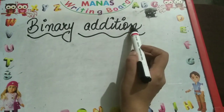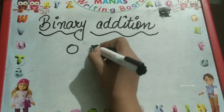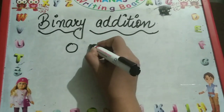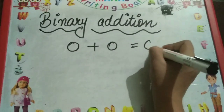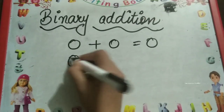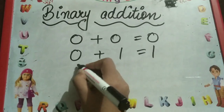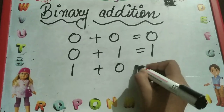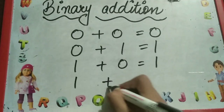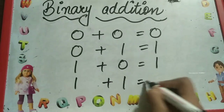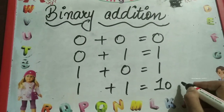Binary addition: 0 plus 0 equals 0, 0 plus 1 equals 1, 1 plus 0 equals 1, and 1 plus 1 equals 2, which is equal to 10 in binary form.